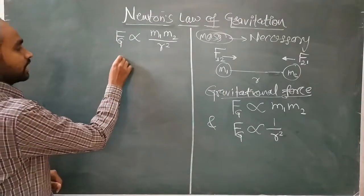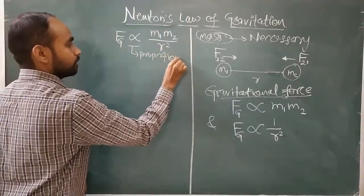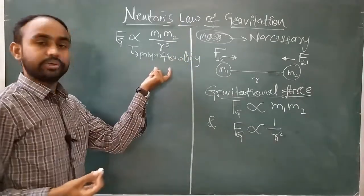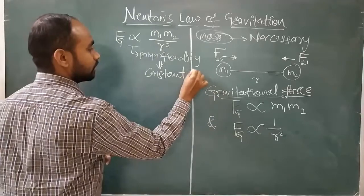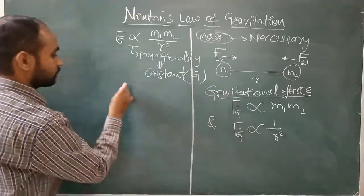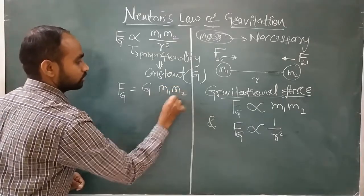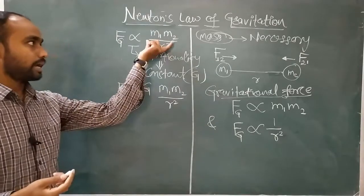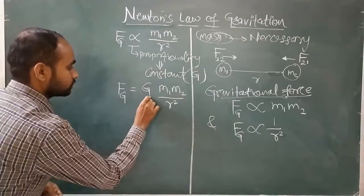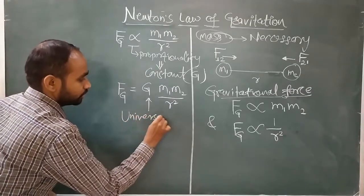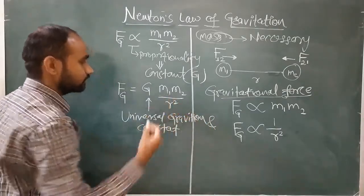Now combining both statements, we can write the gravitational force as directly proportional to M1·M2 divided by R². This proportionality sign we can remove with the help of a constant, and that constant is called the universal gravitational constant, which is denoted by G.